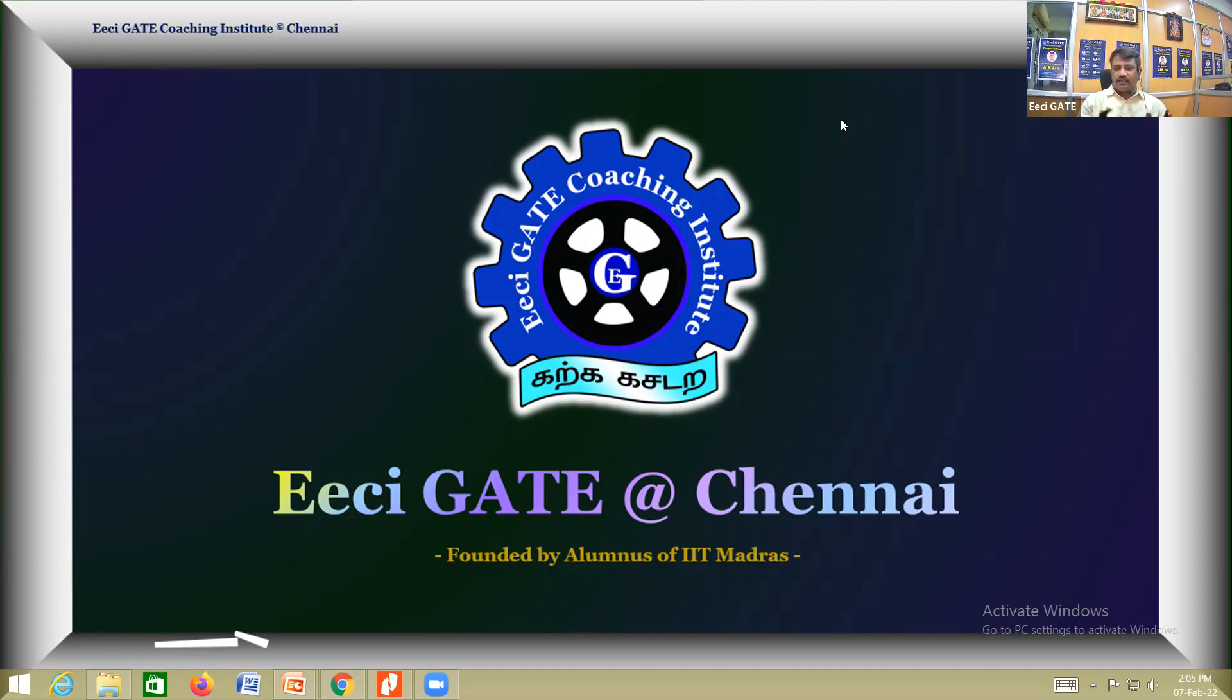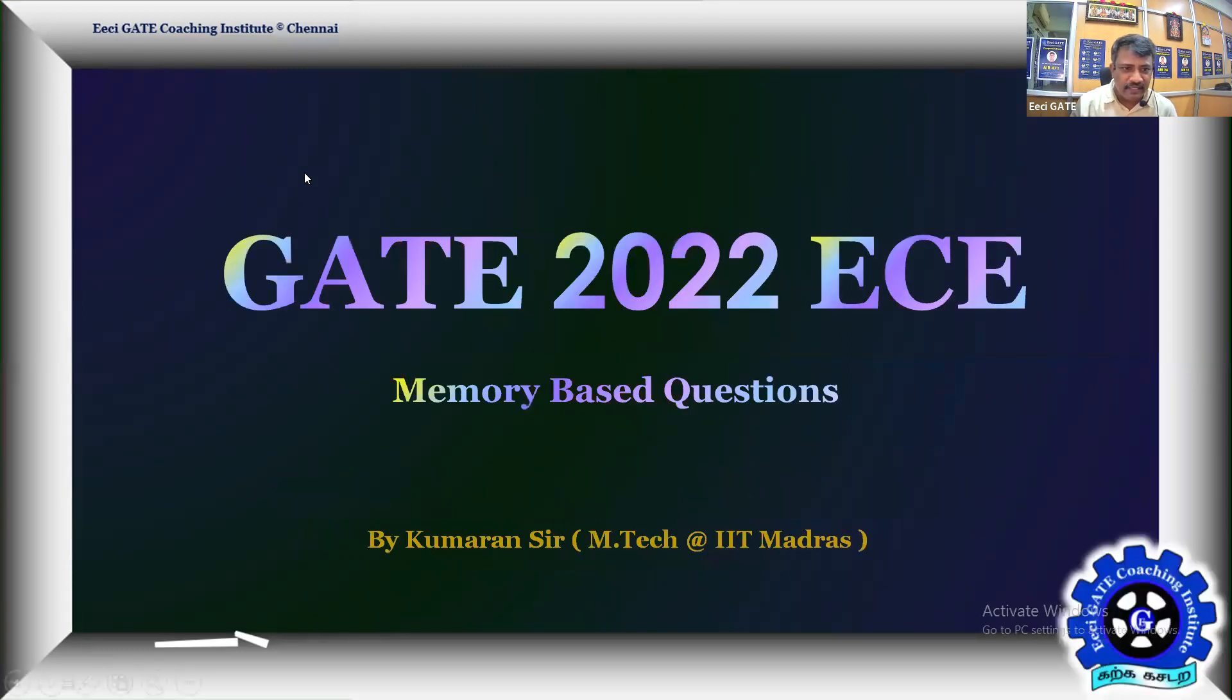We'll only come to know after the declaration of results by the organizing institute, that is IIT Kharagpur. The paper was good and easy to answer. I'll be taking you to one of the problems in the paper, an analog electronics problem using operational amplifier circuits. It was very easy to answer. The paper is still easier than GATE 2021 problems. Welcome you once again to GATE 2022 Eeci memory-based questions from Eeci GATE.